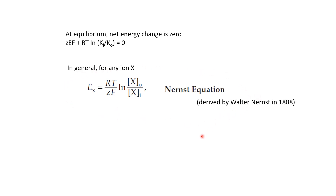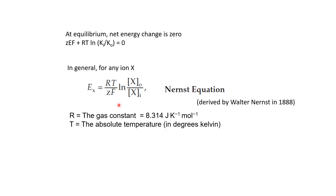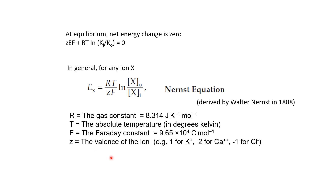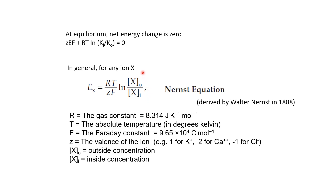This is known as the Nernst equation, derived by Walter Nernst in 1888. Although we have been looking at it in the context of neurons, it is also applicable for any other cell or situation where chemical and electrical gradients are balanced for any kind of ion. In this equation, R is the gas constant (8.314 in SI units), T is the absolute temperature in Kelvins, F is Faraday's constant (approximately 100,000 in SI units), and z is the dimensionless valence of the ion — plus 1 for K+, plus 2 for calcium, minus 1 for chloride, plus 1 for sodium. What matters is the ratio of concentrations: if both are multiplied by 2, the equilibrium potential does not change.